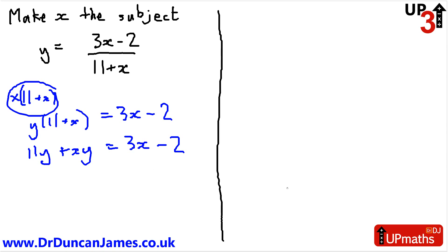Hmm, we want to end up with x equals something, so x wants to be on its own. We can't do it at the moment because there's two x's. So let's try and bring them together. So let's minus 3x. We get 11y plus xy minus 3x equals minus 2.